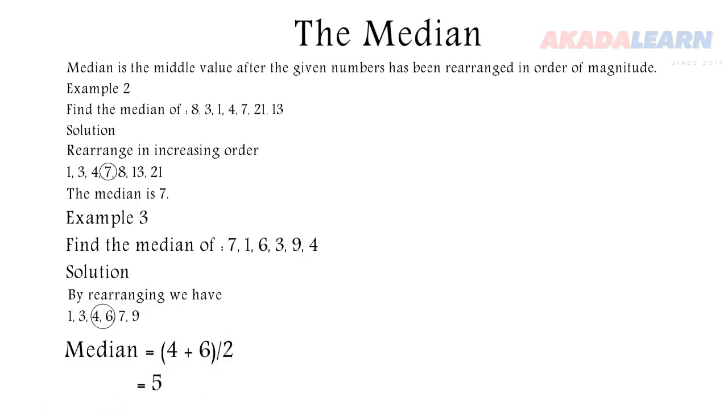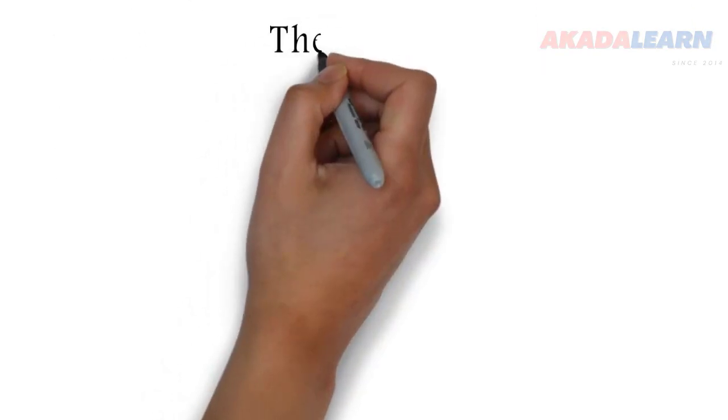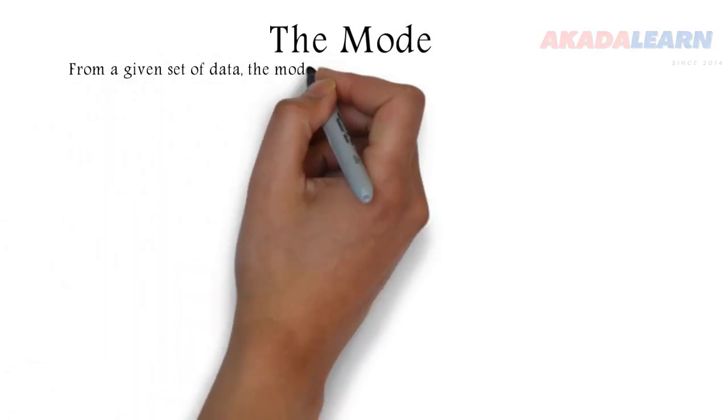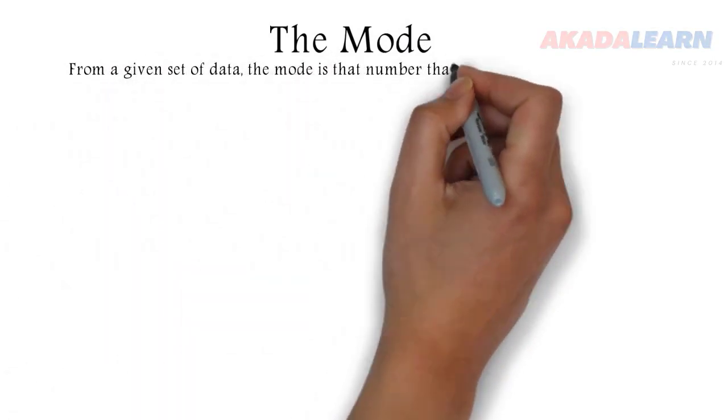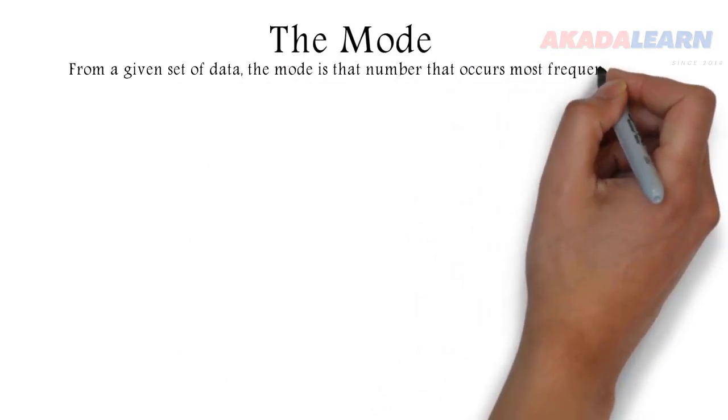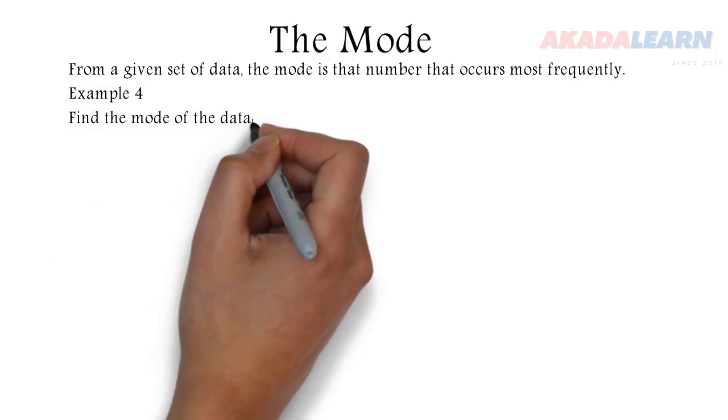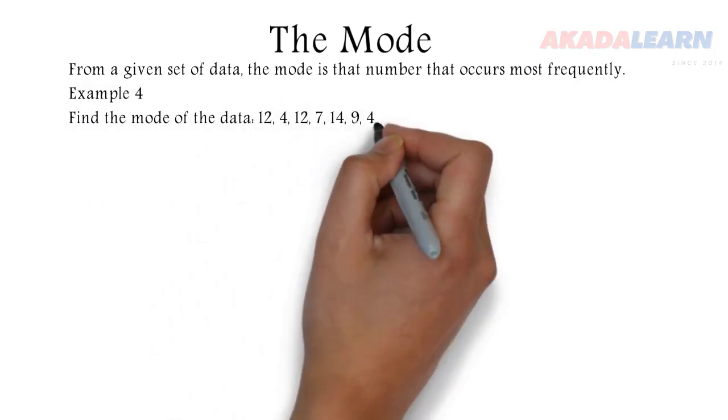Now let's move to mode. When we say mode, what are we talking about? The mode of a given set of data simply refers to that number that occurs the most.